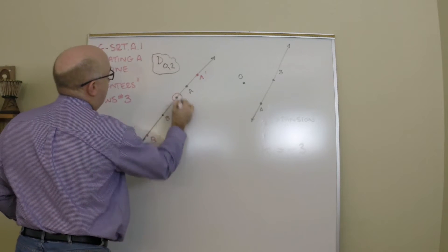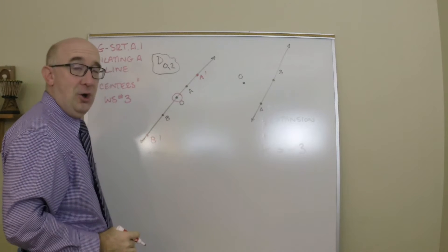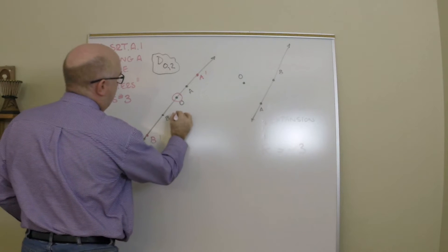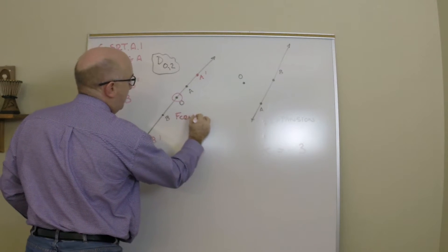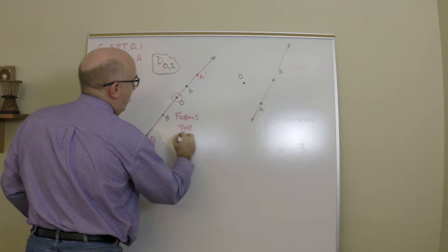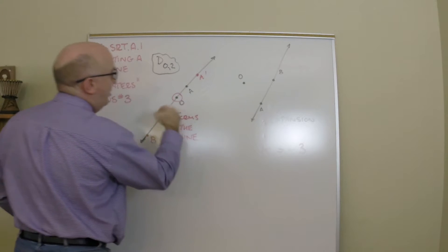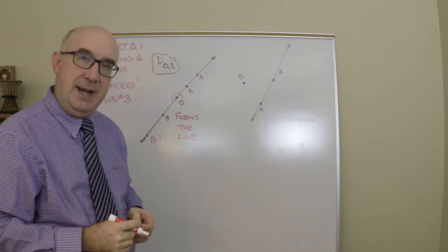they will just move along those two rays. So when the center is on the line, it just forms the line. No new line or no new object is created.